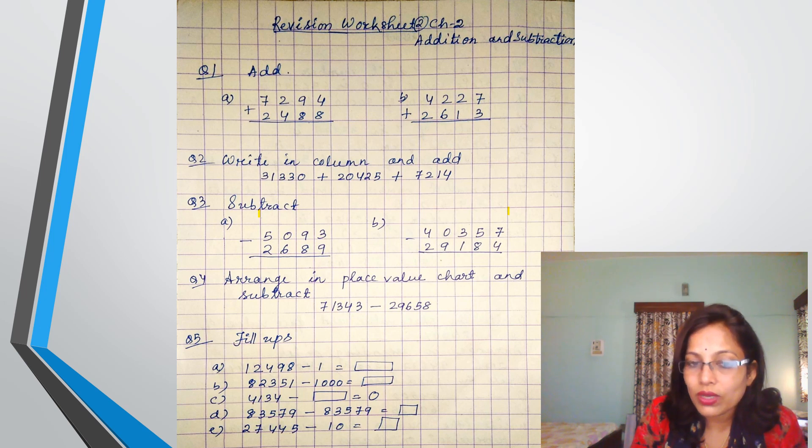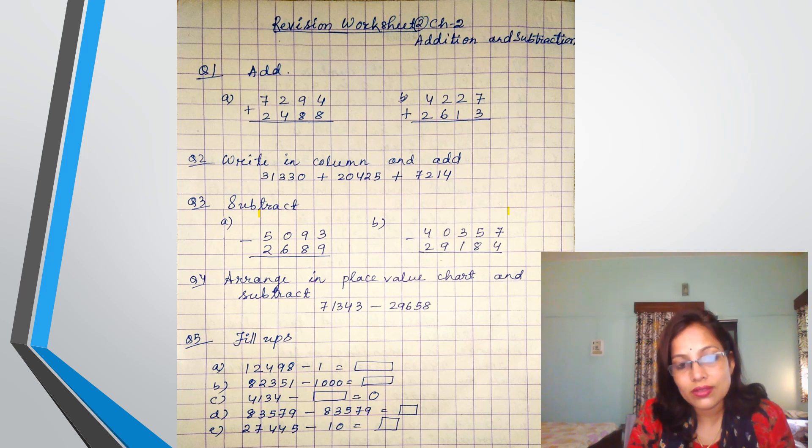So here you have to subtract 1 from the 1,000s place. Which digit is there? 2. Then as it is, you write the rest of the digits. Then 4,134 minus blank is equal to 0. So when you get 0 as answer, we get 0 as answer when you subtract the same number.